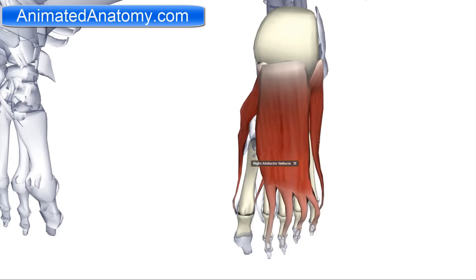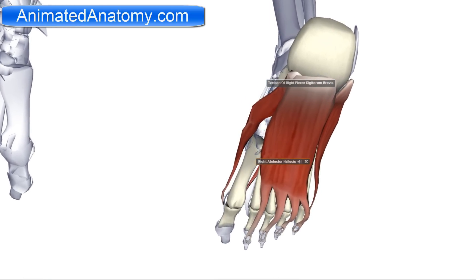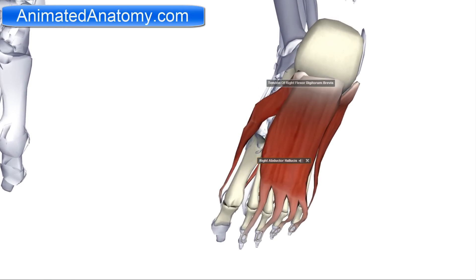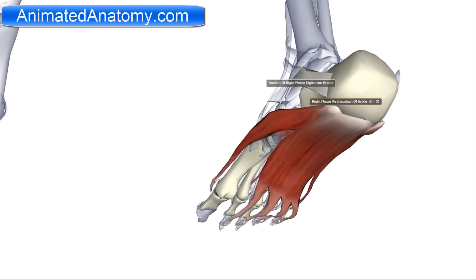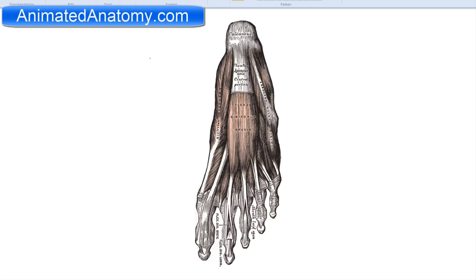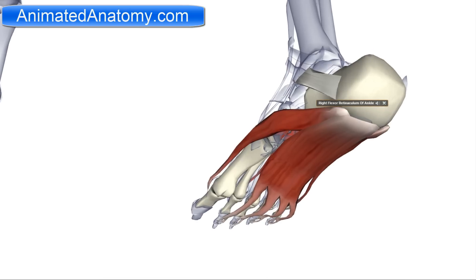The abductor hallucis has its origin on the medial process of the calcaneus, and also on the flexor retinaculum and the plantar aponeurosis. Here is the flexor retinaculum — not clearly visible — and it should also originate from here. The insertion of this muscle is the medial side of the base of the proximal phalanx of the first digit.